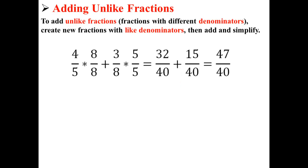What this will do is give us two new fractions, 32 over 40 and 15 over 40. Because they have the same denominator, we can now add them. So 32 over 40 plus 15 over 40 is equal to 47 over 40.